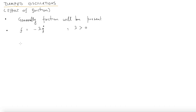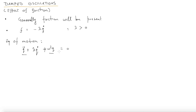If we include this frictional term, the equation of motion of the oscillator becomes: q̈ + λq̇ + ω²q = 0. If λ = 0, meaning we remove all friction, we get back q̈ + ω²q = 0 and the system oscillates at its natural frequency ω. We want to know what happens when such a frictional force is also present — that is what we will talk about today.